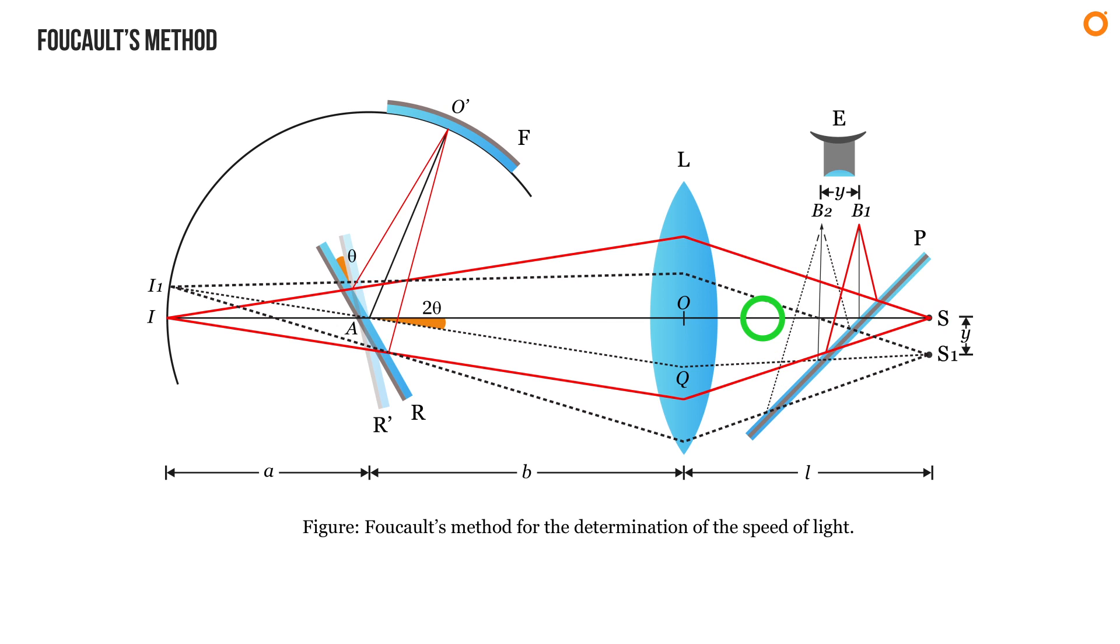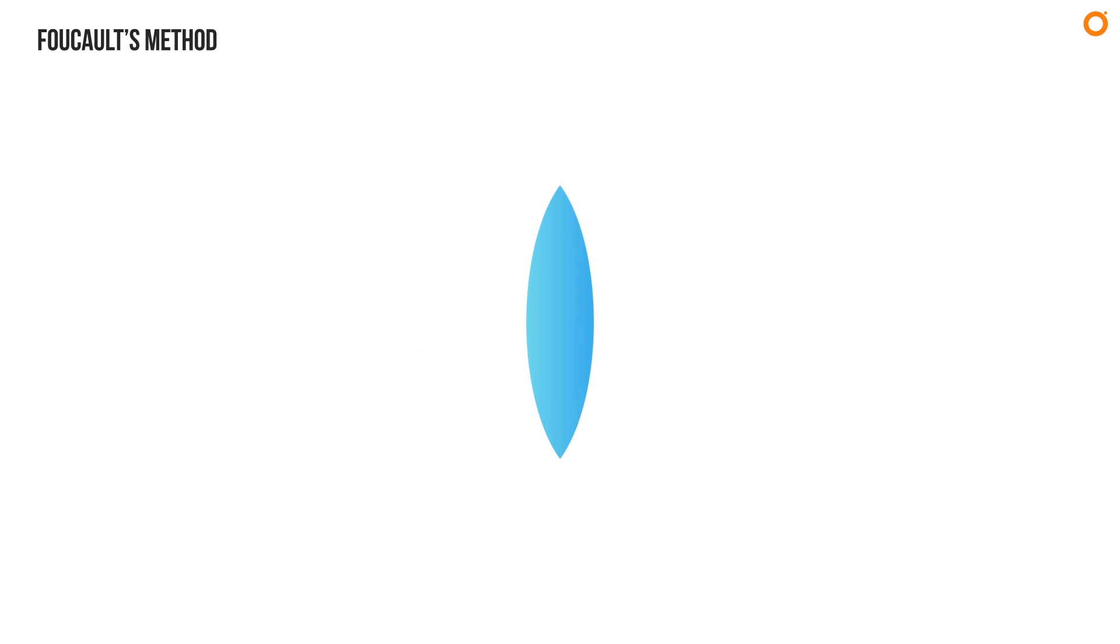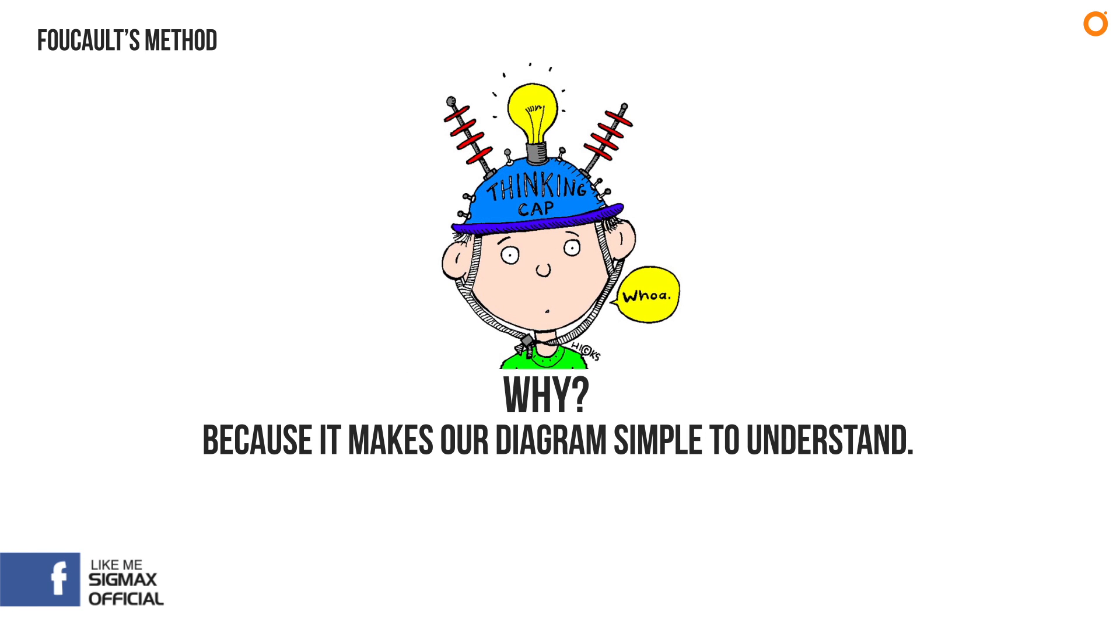Instead of drawing three rays of light, we are going to draw only one along the axis of the converging lens. I know that to form an image in geometrical optics at least two rays of light are needed, but we are breaking this rule and using only one ray of light to derive the expression to determine the velocity of light. Why? Because it makes our diagram simple to understand.